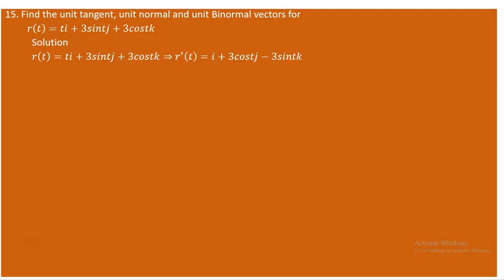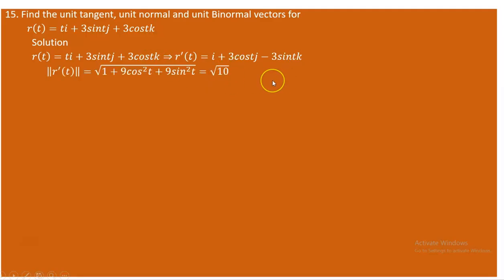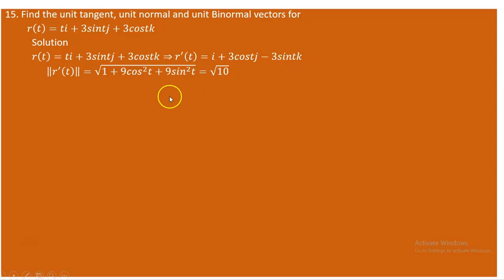The derivative r'(t): the x-component gives 1·i, the y-component 3sin(t) gives 3cos(t)j, and the z-component 3cos(t) gives −3sin(t)k. The magnitude of r'(t) is the square root of 1² + (3cos t)² + (−3sin t)² = √(1 + 9cos²t + 9sin²t) = √(1 + 9) = √10.